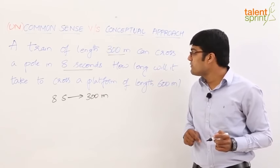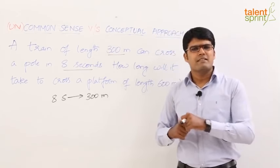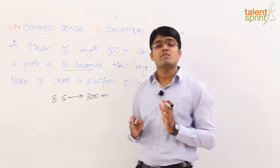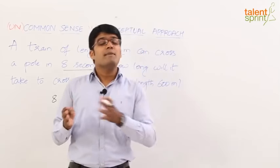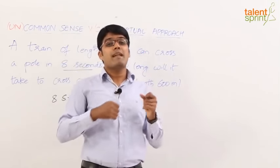Now in the next part of the question, we need to find out how long it will take to cross a platform of length 600 meters. Understand when the train has to cross the platform, how much does it have to travel? It has to travel its own length plus the length of the platform.